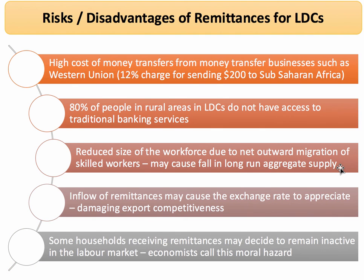However, it's important to evaluate. Remittances have grown in significance and increased in importance for many developing and emerging market countries. However, remittance incomes do carry some negatives as well. A really key point is that the cost of transferring money across countries can be extremely high. Monopolistic firms such as Western Union can charge above 10% for sending just a small sum from a Western nation or an Asian economy back to sub-Saharan Africa, so one could argue that the monopoly power of these businesses is a major cost.